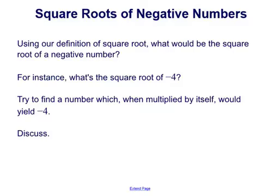Using our definition of a square root, what would be the square root of a negative number? If you think about all the examples we've seen so far, we've always been taking the square root of a positive number. For instance, what is the square root of negative 4? By definition, you're trying to find a number which, when multiplied by itself or squared, would yield negative 4. Discuss with a partner — see if you can find that number. What number times itself equals negative 4?